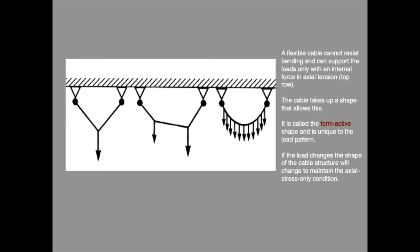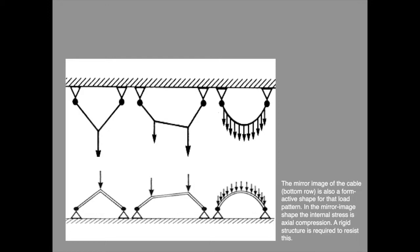Shown here are three form active shapes caused by different load conditions on a horizontally spanning flexible cable. These are tensile form active structures; the internal forces are pure axial tension. The mirror images of these structures about the horizontal axis are also form active shapes, but in the mirror image structures the internal force is pure axial compression. The term form active here means a shape that produces axial internal force only. The compressive versions must be rigid and are therefore not literally active, but they nevertheless produce axial internal forces in response to the particular load shown because they have the appropriate overall form.